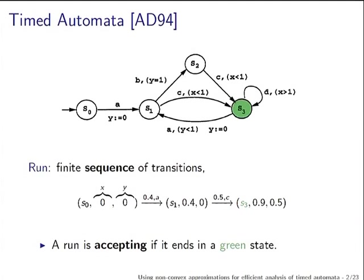Because this is an automaton there should be edges between states. On the edges you have an action and additionally a constraint over clocks. For example, this constraint says that if the automaton is in state S1 it can take this transition only if the value of X at that time is less than 1. You also have the power of resetting a clock back to 0 when you take a transition.